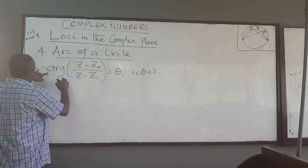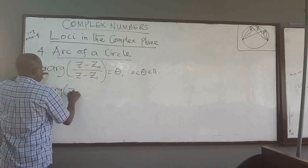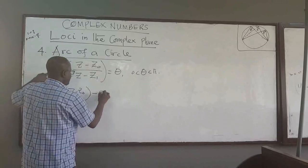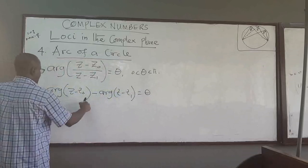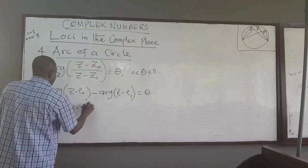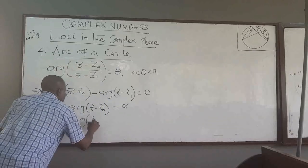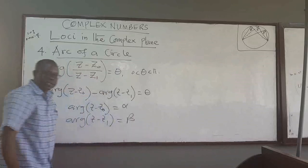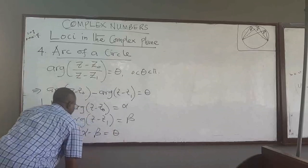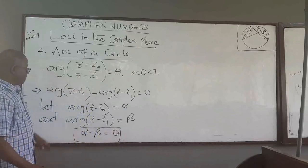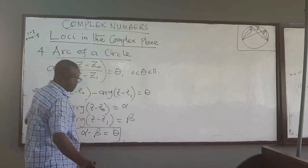We know that the argument of (z minus z0) over (z minus z1) equals theta can be rewritten as the argument of (z minus z0) minus the argument of (z minus z1) equals theta. So we let the argument of (z minus z0) represent some angle called alpha, and let the argument of (z minus z1) represent another angle called beta. This means that alpha minus beta is equal to theta.